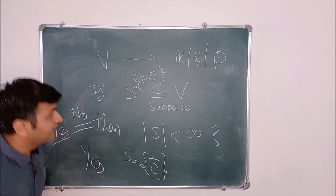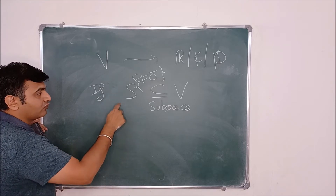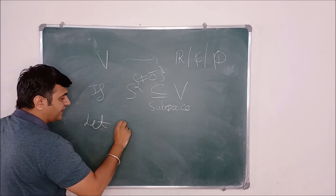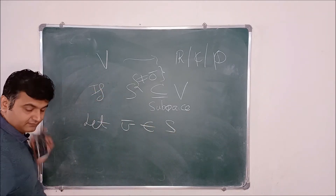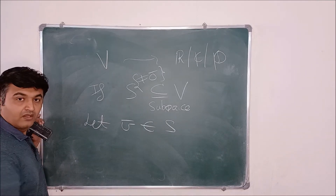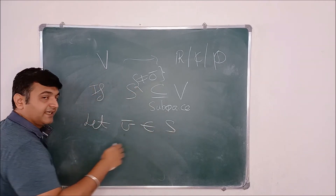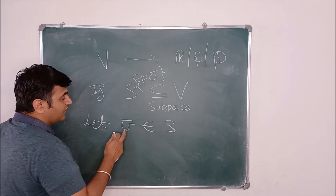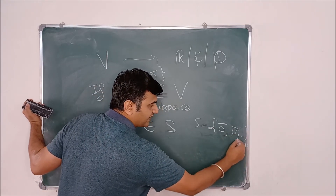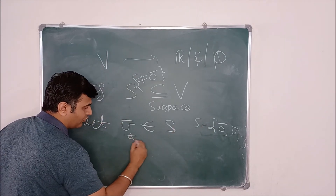Why? Let us try to see that. The answer is very easy. What I want to show is that S is an infinite set. Now S is a non-zero subspace, so let v̄ belong to S, and v̄ is non-zero, because S is non-zero — meaning S has a vector other than zero as well. S has the zero vector because it's a subspace, and it also has some non-zero vector. So let me take that non-zero vector, say v̄.